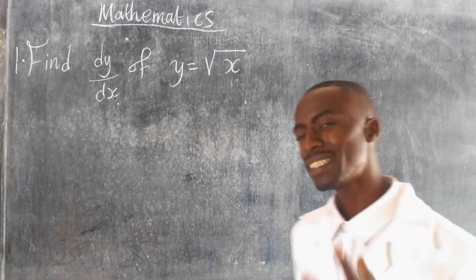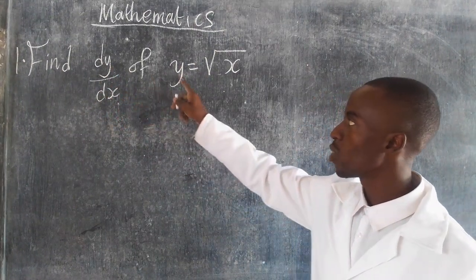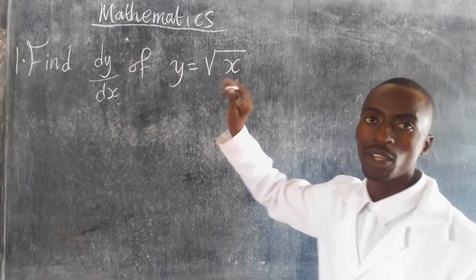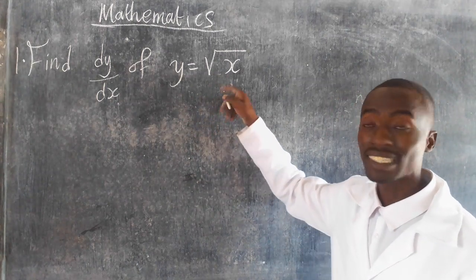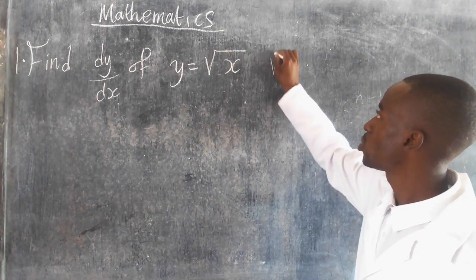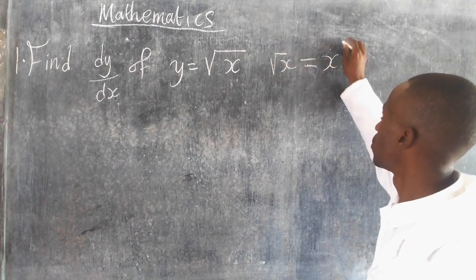We have a mathematics question that says find dy over dx of y equals the root of x. The first step to solve this question, we have to simplify this. Now you can understand that the root of x is the same as x to the power 1 over 2.